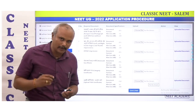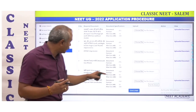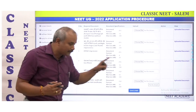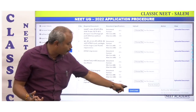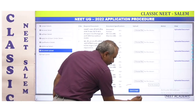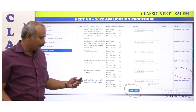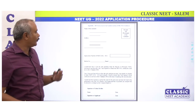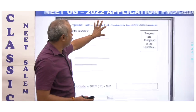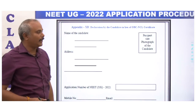You can follow one particular format — one way to upload the OBC Certificate. If you are applying with the OBC Certificate, you can upload it. There is a specific format or annexure that includes a declaration by the candidate in lieu of the OBC Non-Creamy Layer Certificate.